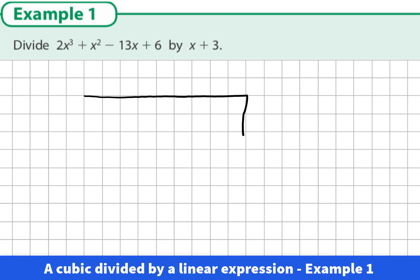Example 1: Divide 2x cubed plus x squared minus 13x plus 6 by x plus 3. We know from multiplying out linears by quadratics that this is the cubic array that we would use for this question.